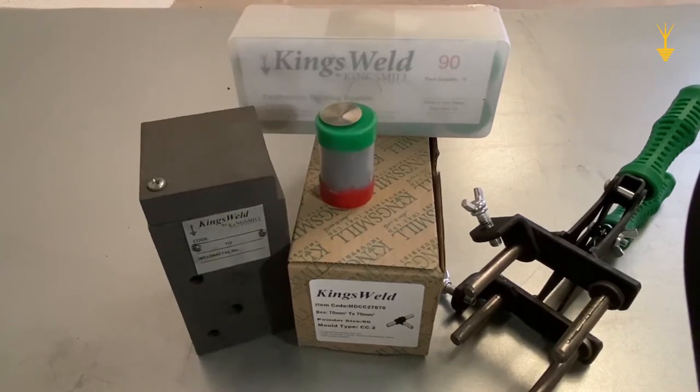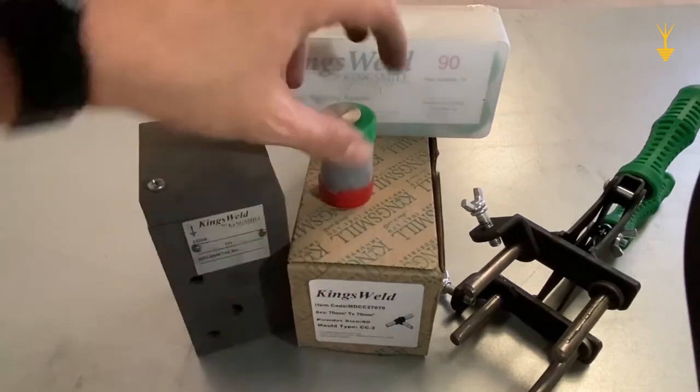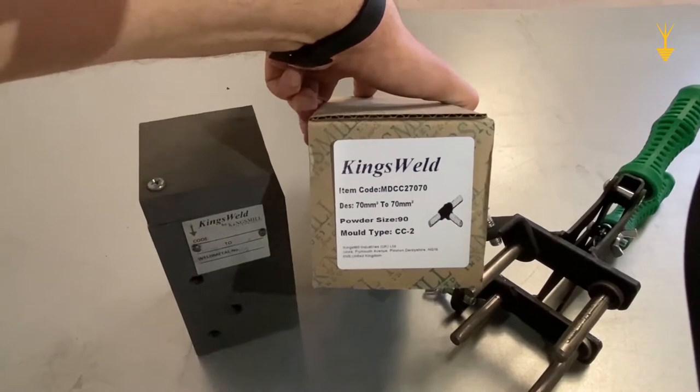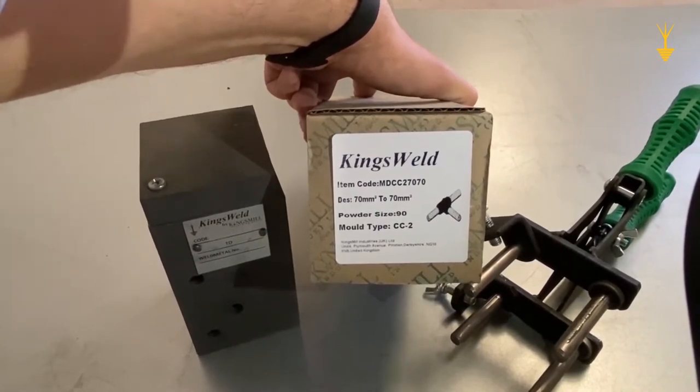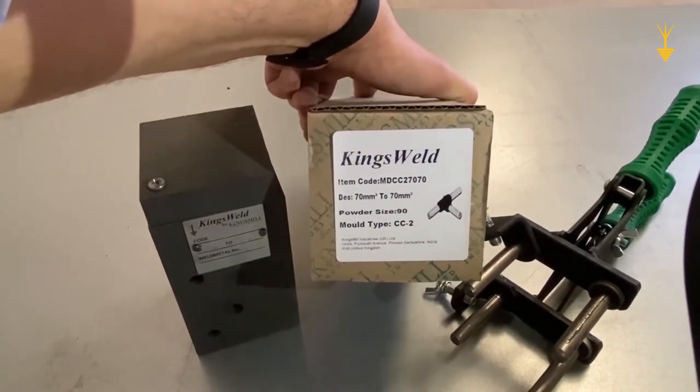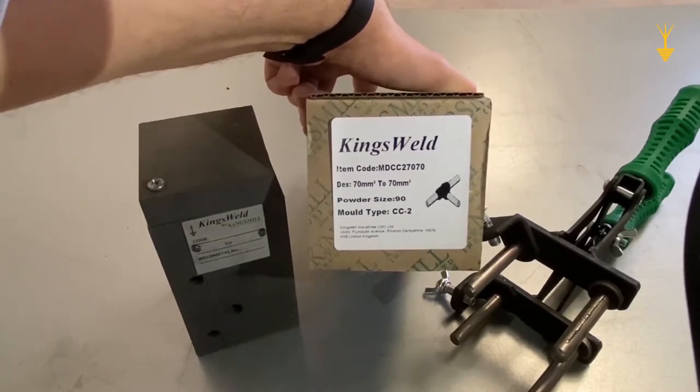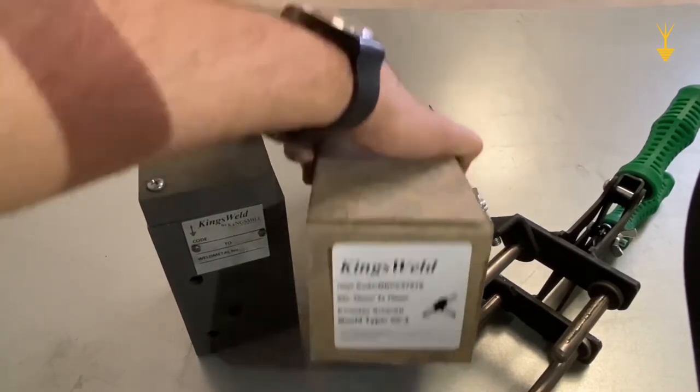So let's get started by first taking a look at the mold. The mold comes in a package, comes boxed, with the part number clearly mentioned, along with the description of the conductors to be welded together. This, in addition to the powder size required and the mold type.